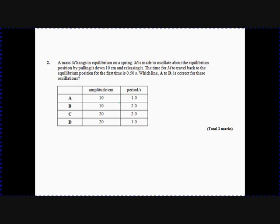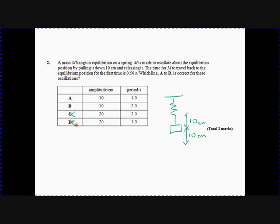Here's our second question. We've got a mass on a spring. If we draw ourselves a little picture: here's our spring, here's our mass. We're pulling this down by 10 centimetres and then releasing it. We've got amplitude and period. If you pull it down 10, it's going to go up another 10, but the amplitude is half the total oscillation. So the amplitude is 10 centimetres — it's not C and it's not D.